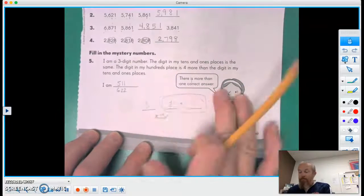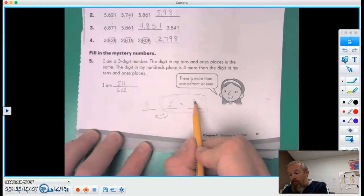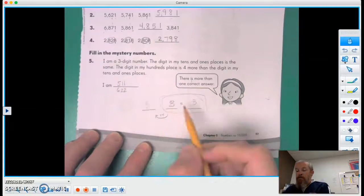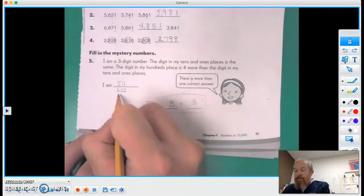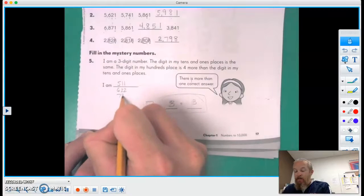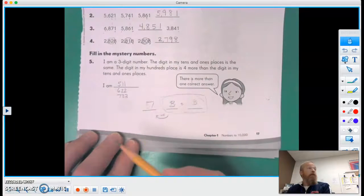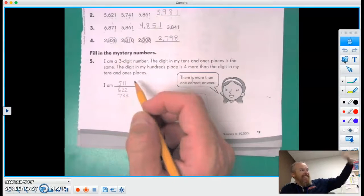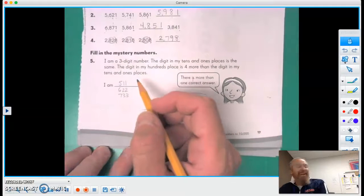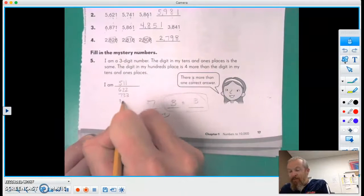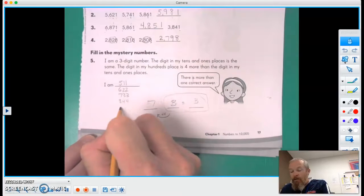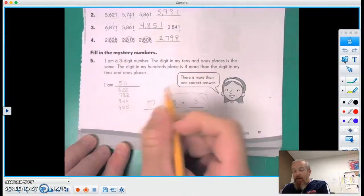Now are you kind of seeing the pattern on that? We could do a three. This has to be a three. Three plus four is seven, so 733. We could do a couple more. We could do 844, we could do 955.